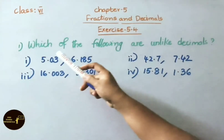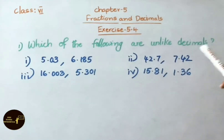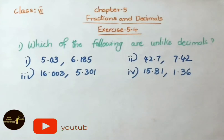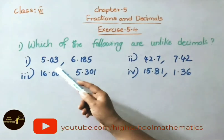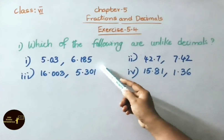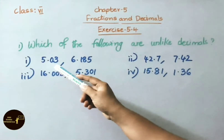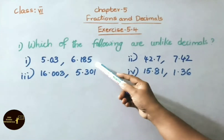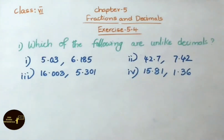See the first question: which of the following are unlike decimals? Decimals having different number of decimal places are called unlike decimals. See the first sum: 5.036 and 0.185. The first number has 2 decimal places and the second number has 3 decimal places. Both are having different decimal places, so these are unlike decimals.